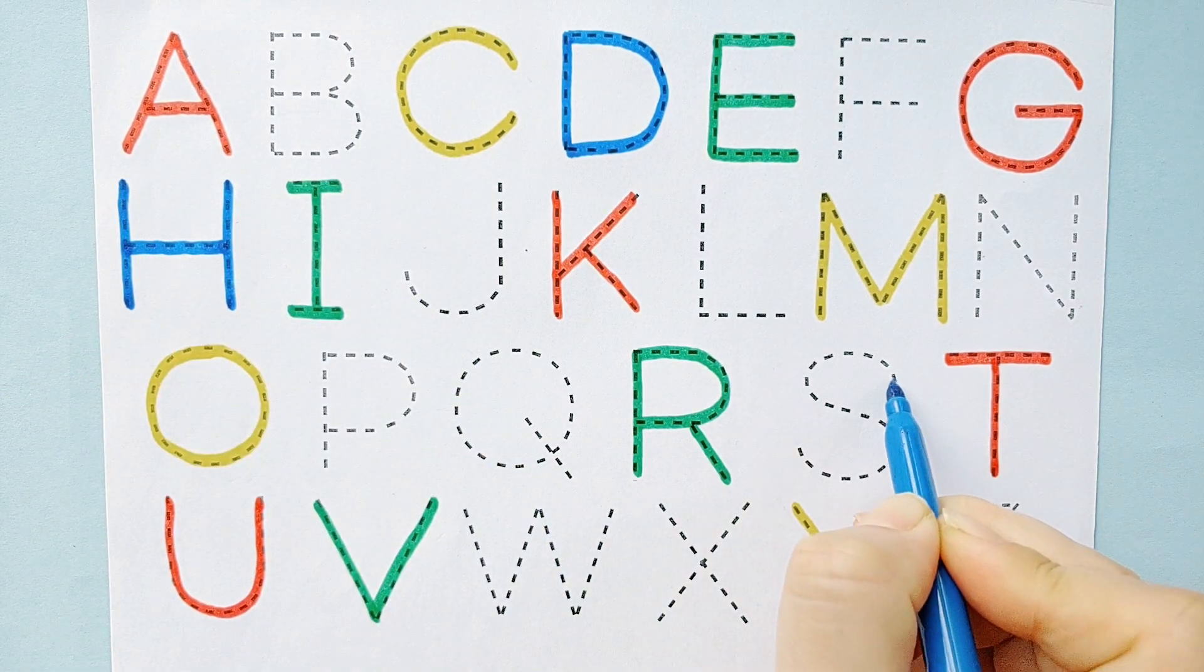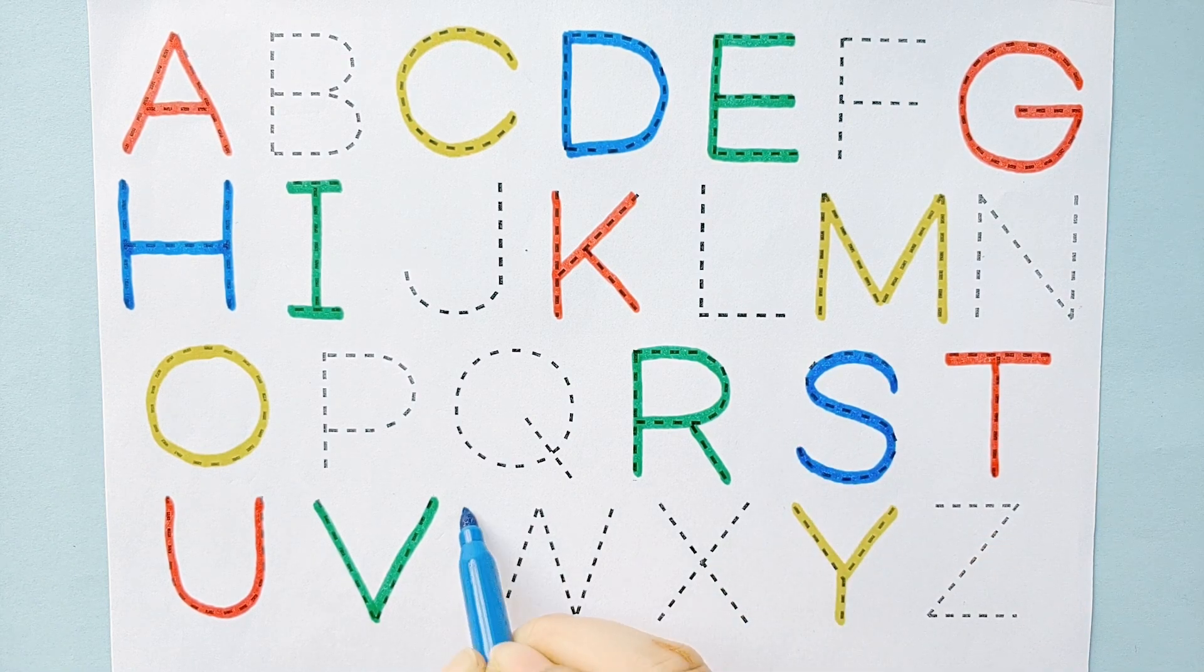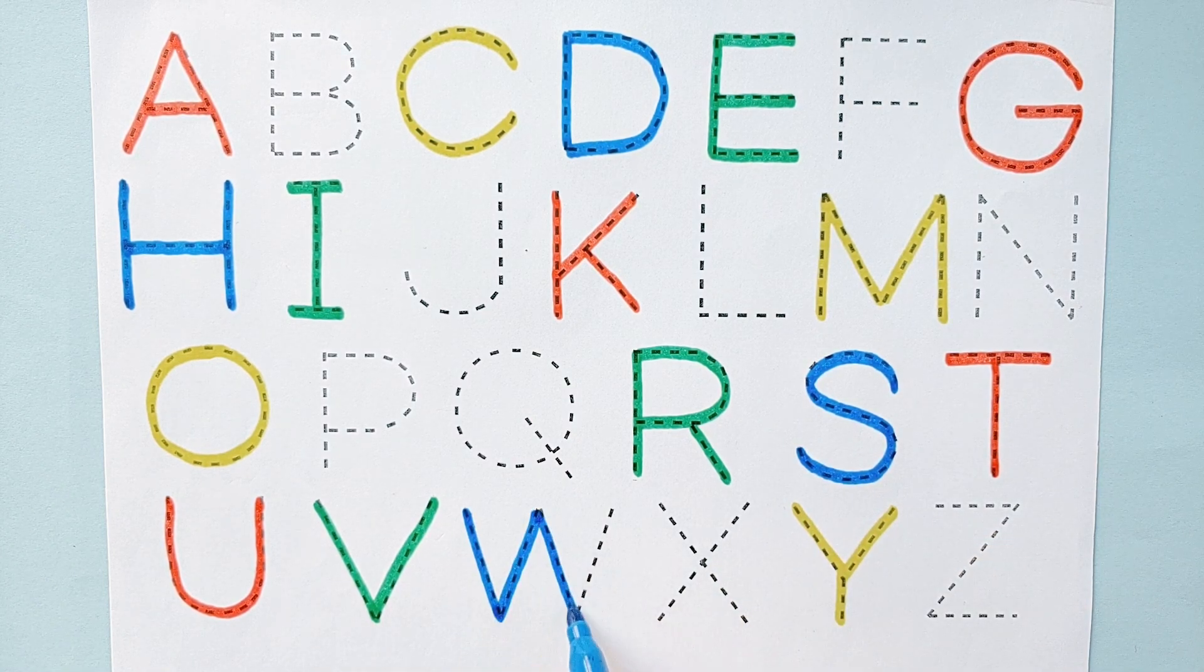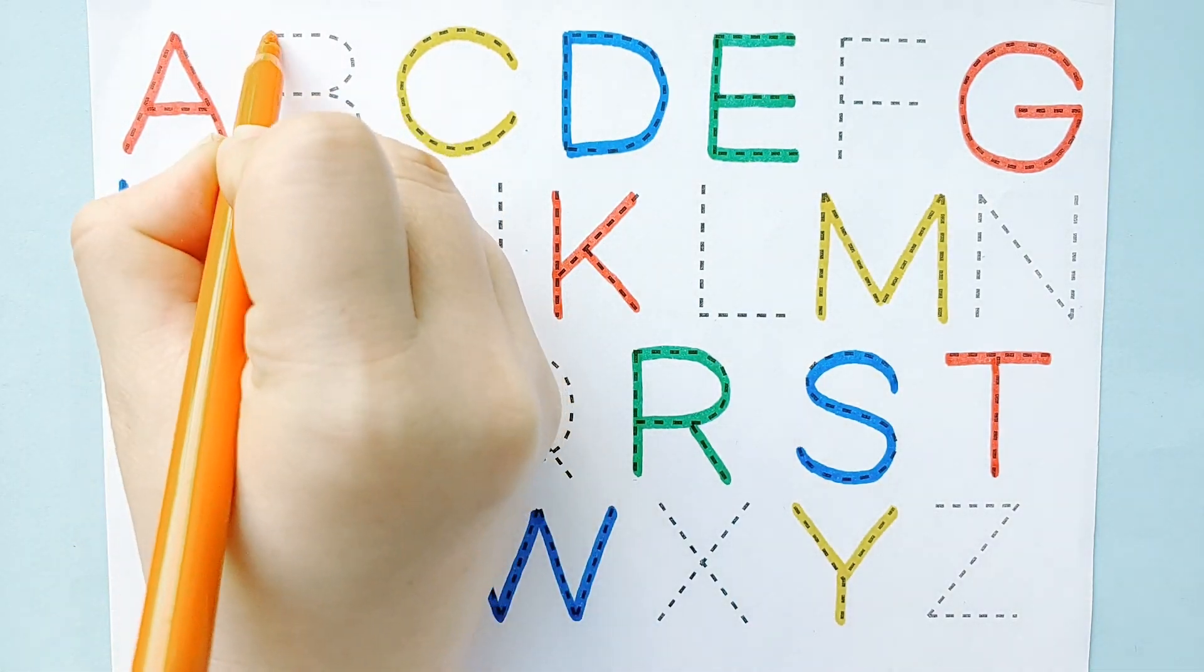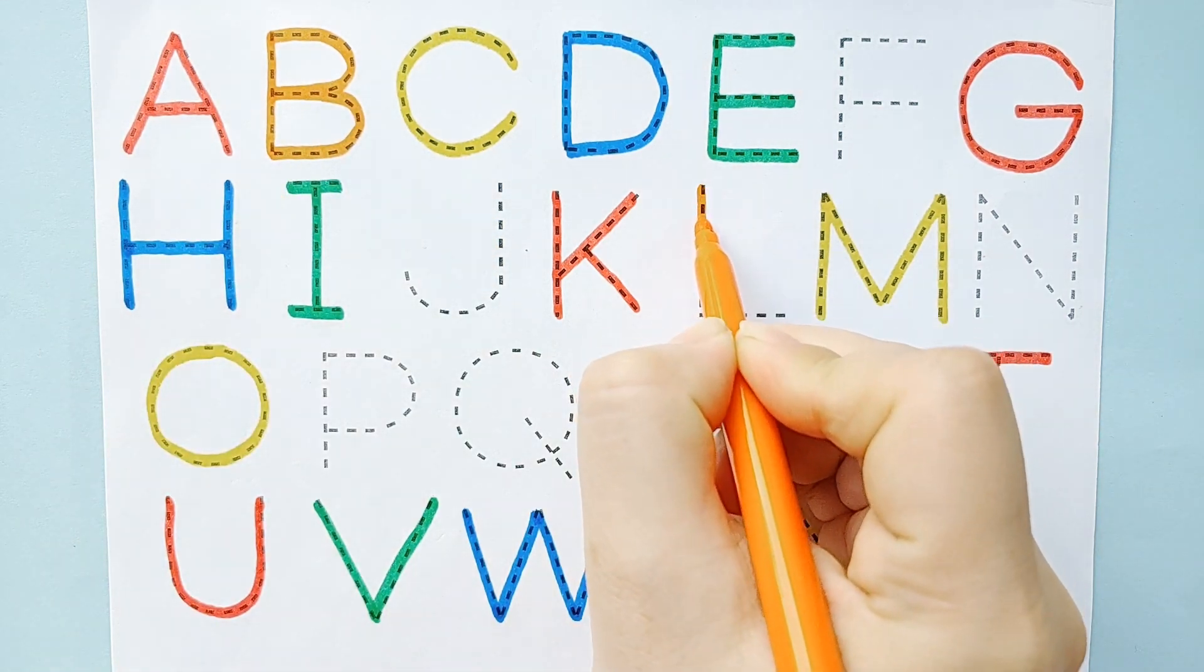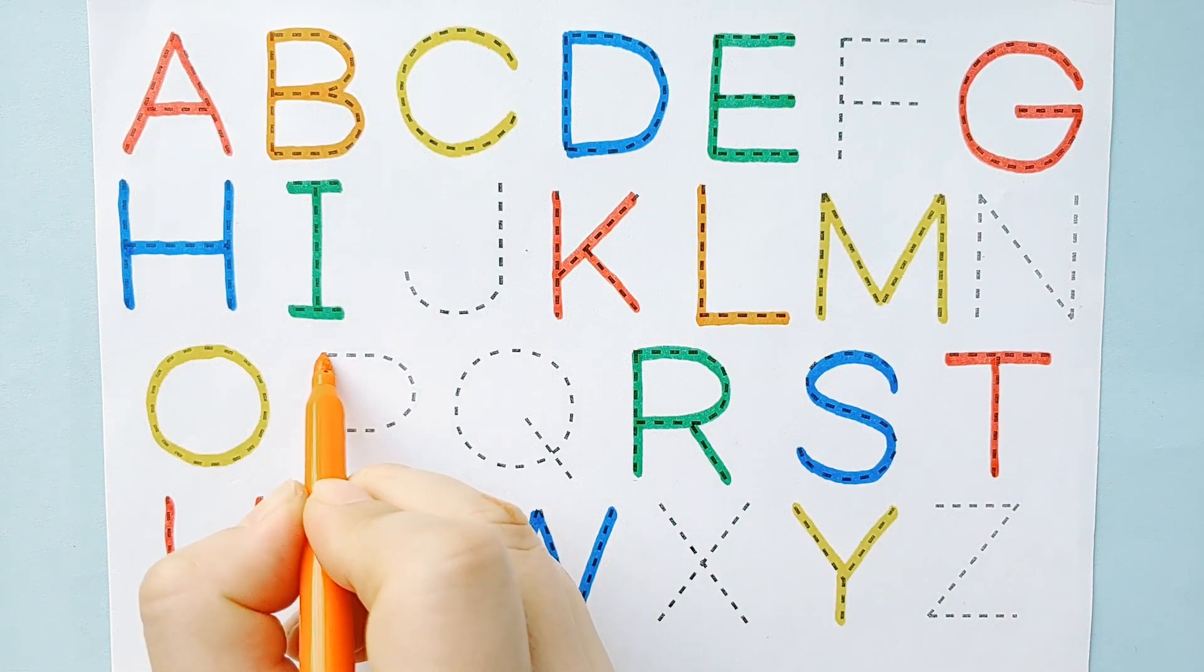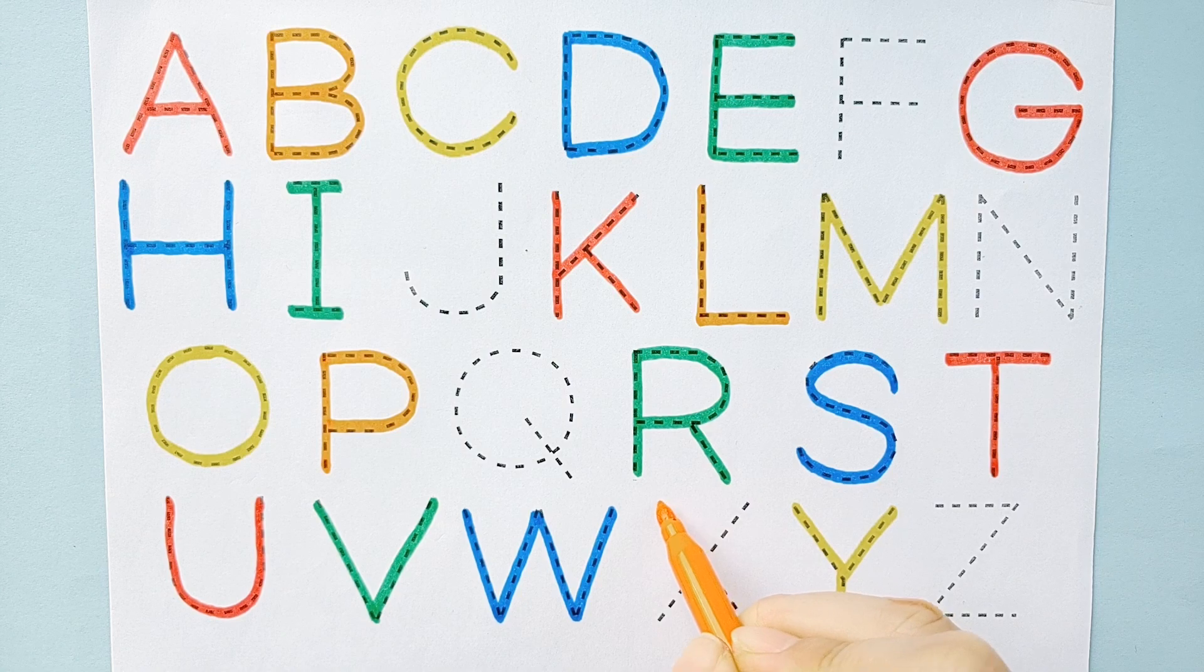A, B, C, D, E, F, G, H, I, J, K, L, M, N, O, P, Q, R, S, T, U, V, W, X, Y, and Z. Now I know my ABCs. Next time won't you sing with me.